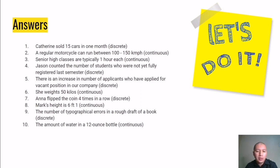Anna flipped the coin four times in a row is discrete because you have to count it. Mark's height is 6 foot 1. This is continuous because it refers to height. The number of typographical errors in a rough draft of a book is discrete because you would have to count the number of errors, regardless of the nature and length of the error. The amount of water in a 12-ounce bottle is continuous because it pertains to volume and weight. I hope you have understood and now learned how to differentiate between discrete and continuous.